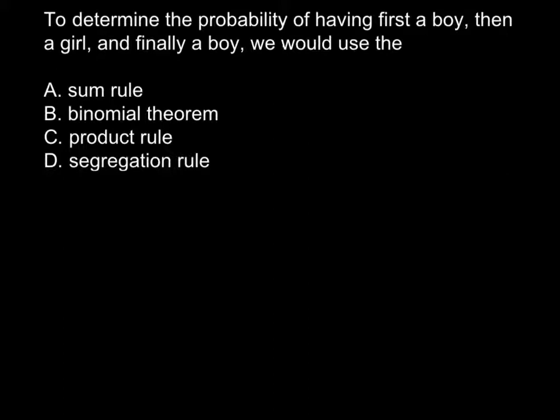Starting with answer D: the segregation rule actually means that two alleles present in the human genome during meiosis would segregate independently and join with the homologous chromosome in the zygote. This is totally unrelated to our problem, so we cross it out.